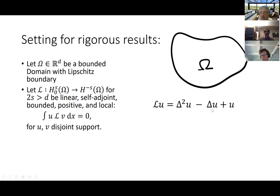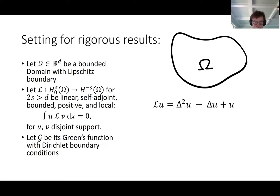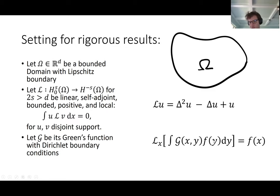For instance, something like a bilinear operator. The important thing is that the regularity of the operator is such that the solution space is embedded in the continuous functions, so pointwise evaluation makes sense, and we'll see in a moment why that is important. We take g to be the Green's function of this partial differential operator — its inverse in the sense of convolution. So if you take an f and convolve with g and then apply the differential operator, you get f back. This is with Dirichlet boundary conditions, i.e., zero boundary conditions.